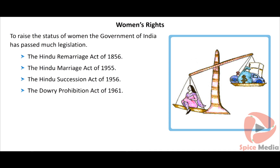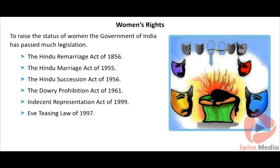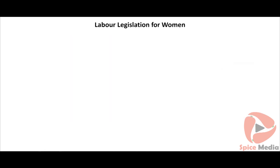To prohibit the indecent representation of women in magazines, newspapers, etc., the Indecent Representation Act was passed in 1999 by the Tamil Nadu government. To relieve women of harassment, the Eve Teasing Law was passed in 1997. Thus the government has taken all efforts to uplift women from their downtrodden position.